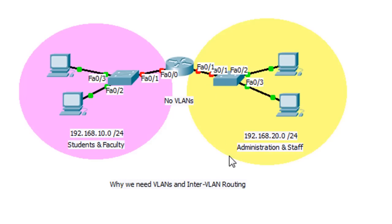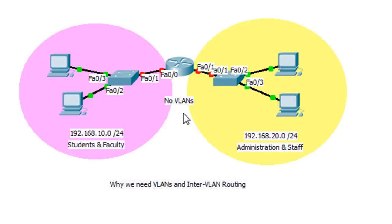This is a scenario that has multiple networks. It needs routing between the networks because we actually want them to be able to communicate across networks sometimes. But this is a scenario where you have no VLANs.